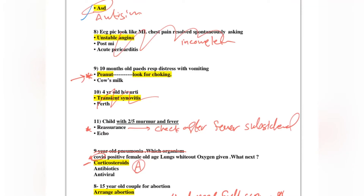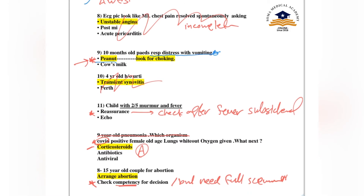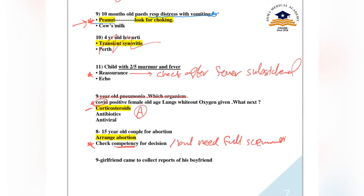A 10-month-old pediatric patient with respiratory distress and vomiting: the most common cause is a peanut — always look for choking. For a child with a murmur and fever, remember to check after the fever has subsided.